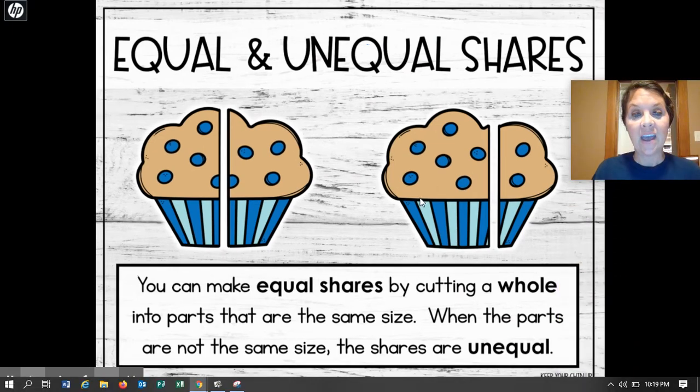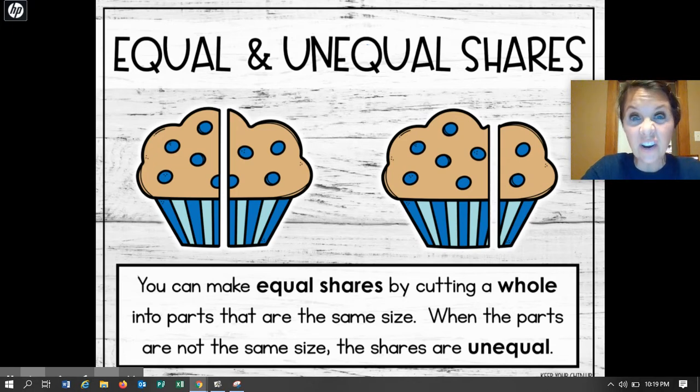So, halves have to be made into equal shares by cutting the whole thing into parts that are the same size. When the parts are not the same size, the shares are unequal. So, this one here is equal, and this cupcake here is unequal. They have to be what? The same what? Let's pause. Good. They have to be the same size.